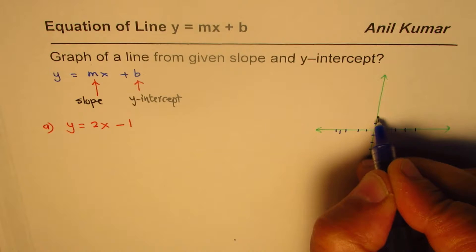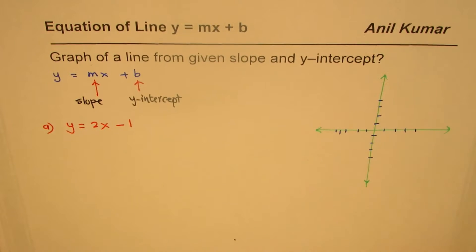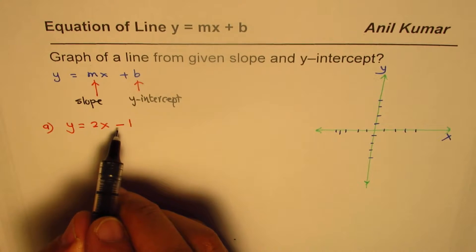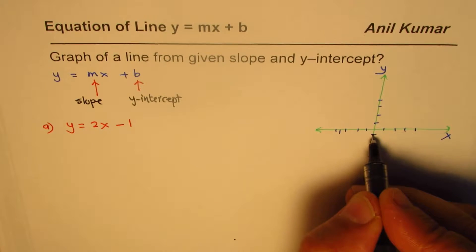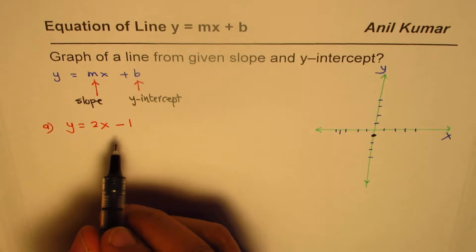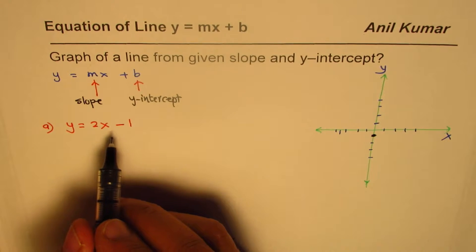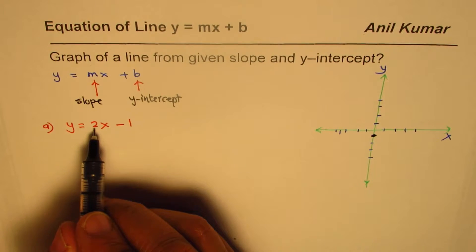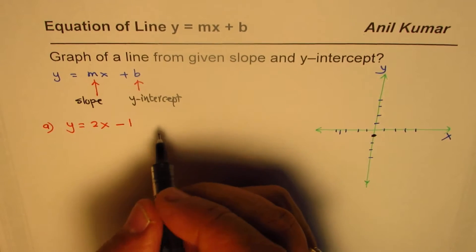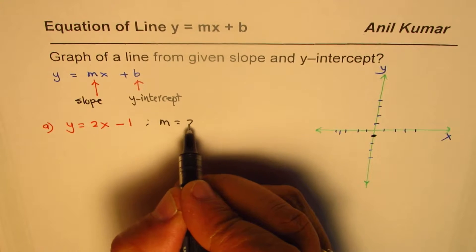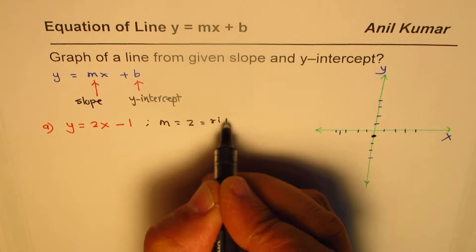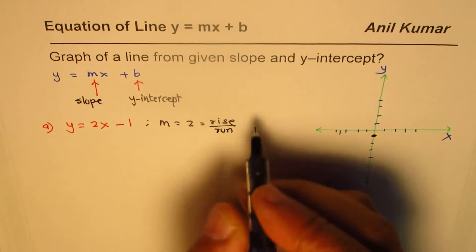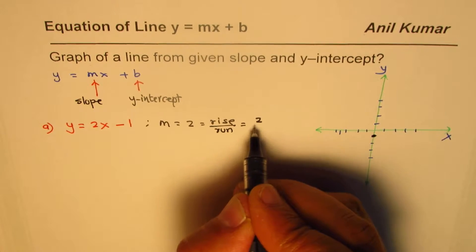This is the x-axis and that's the y-axis. We need to sketch y = 2x - 1. The first step is to find the y-intercept, which is -1, and mark that point. To draw a line we need just two points. The slope is 2, and slope equals rise over run, so slope m = 2 = 2/1.